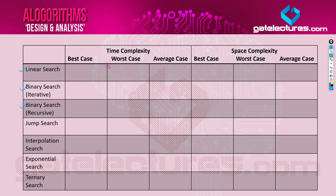First, you should know the time complexities of these searching algorithms and which is better compared to the others. In 99% of cases, we are going to prefer binary search over any other searching algorithm. The time complexity for linear search in the best case is O(1) — that is the case when you find the element right at the beginning.